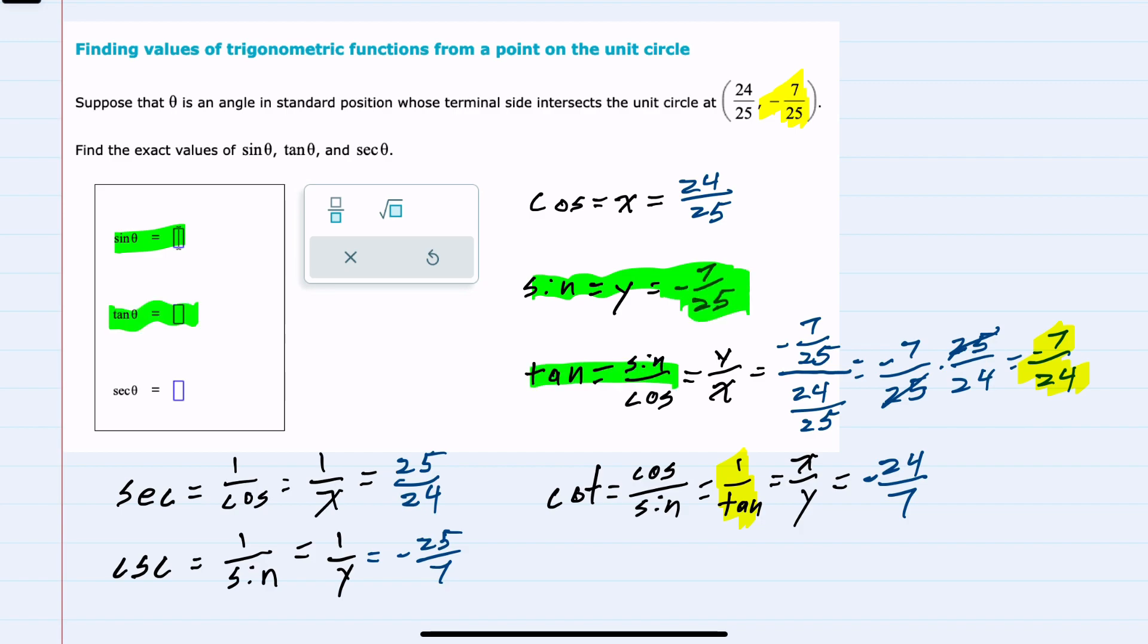So the sine of theta here is our negative 7/25. The tangent is our negative 7/24. And then we were asked for secant, which is our 25/24. We found all 6, but we were only asked in this example for these 3.